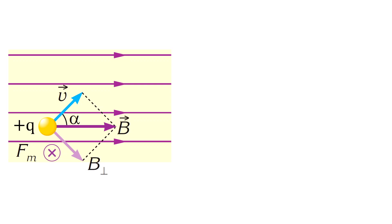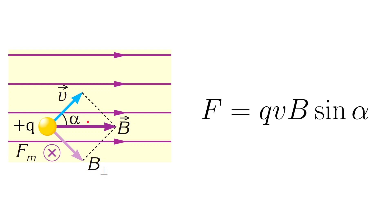If the magnetic field direction makes an angle with the direction of the velocity, the perpendicular component of the magnetic field produces the force shown in the picture. The force can be calculated using the following relationship, where alpha is the angle between the velocity and the magnetic field. This is a universal equation, and we call this the Lorentz force.